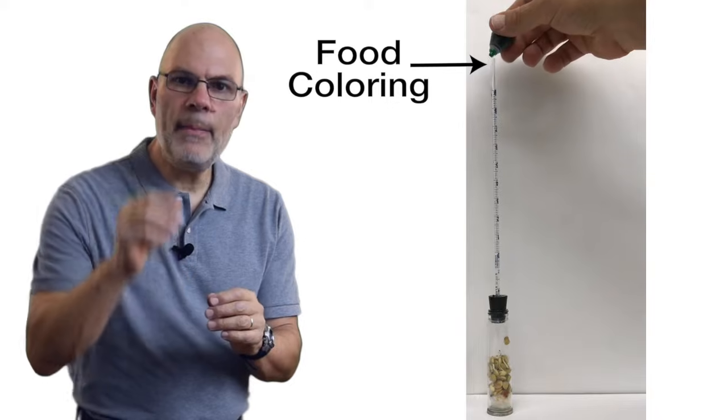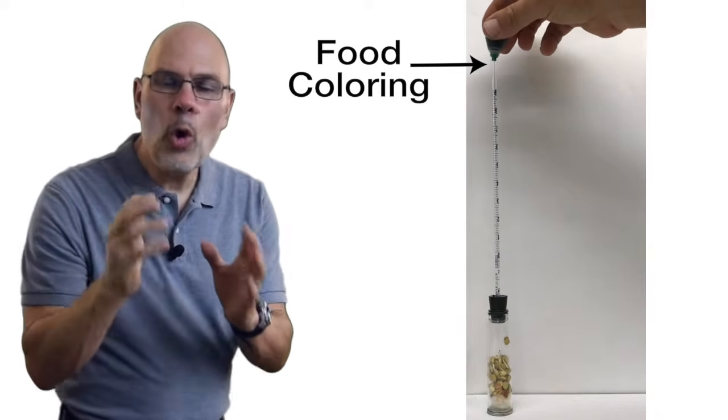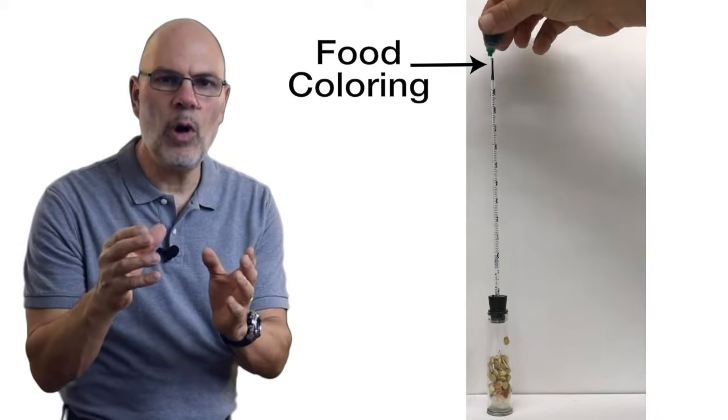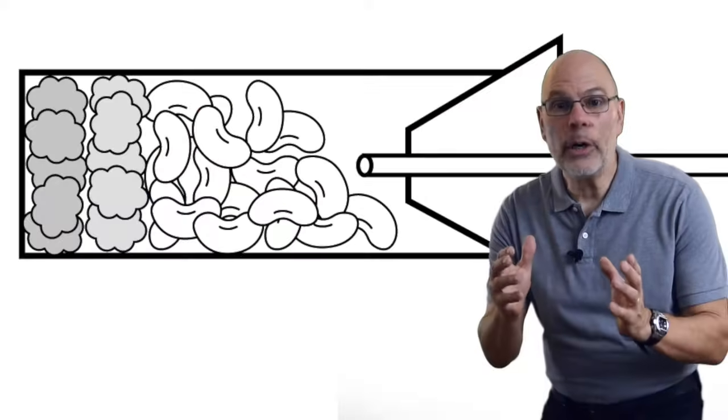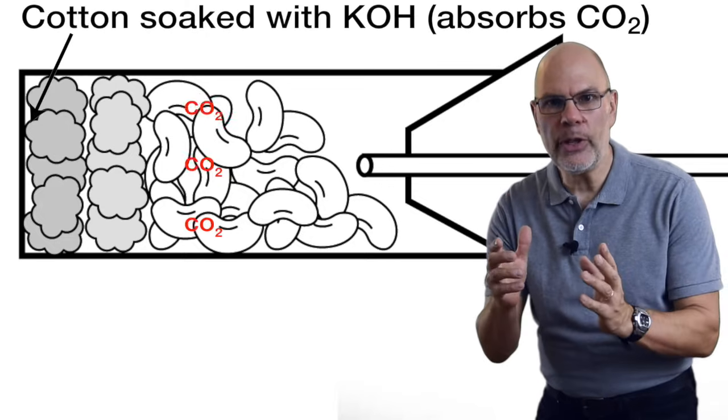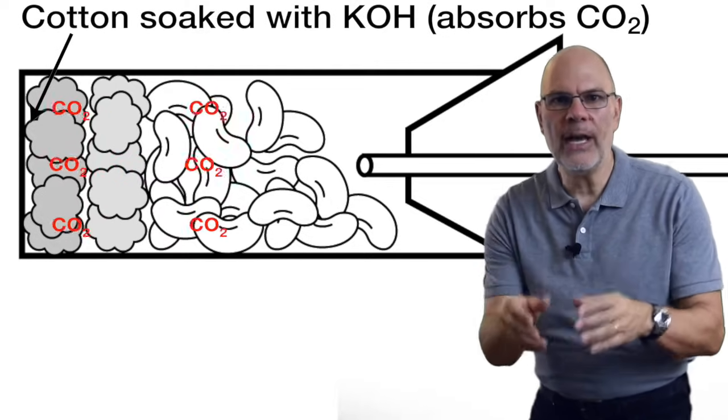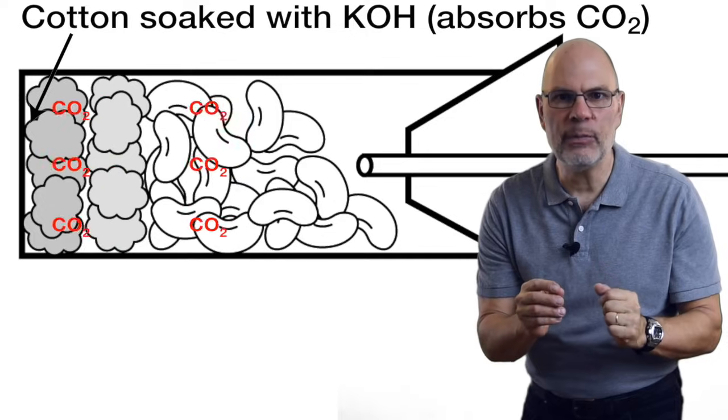You seal off the top of the pipette with food coloring, or you can immerse the entire system in water. Now there's a fixed volume of gas inside the respirometer. As your organism respires, the CO2 that it produces will be absorbed by the potassium hydroxide that's in the absorbent cotton.